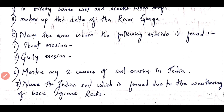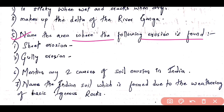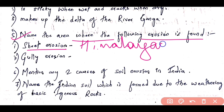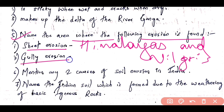Question 5: Name the areas where the following erosion is found. Sheet erosion is found in the areas of the Himalayas and Nilgiris (N-I-L-G-R-I-S). Gully erosion is found in the Chambal Valley (C-H-A-M-B-A-L V-A-L-L-E-Y).